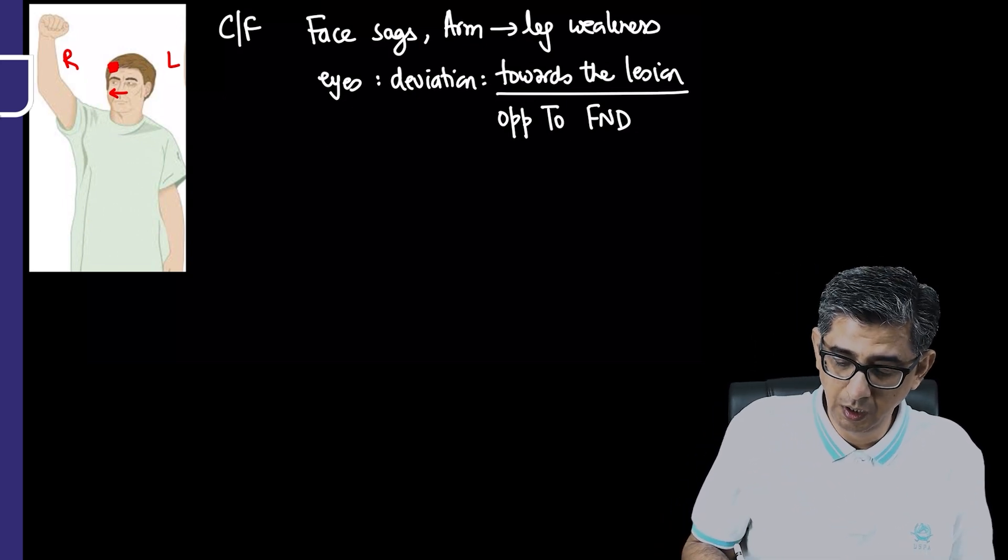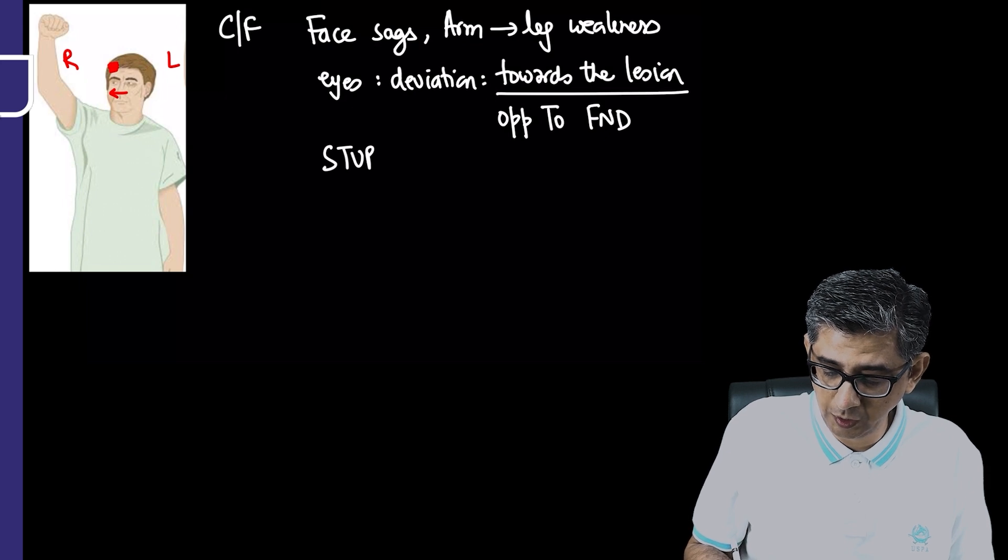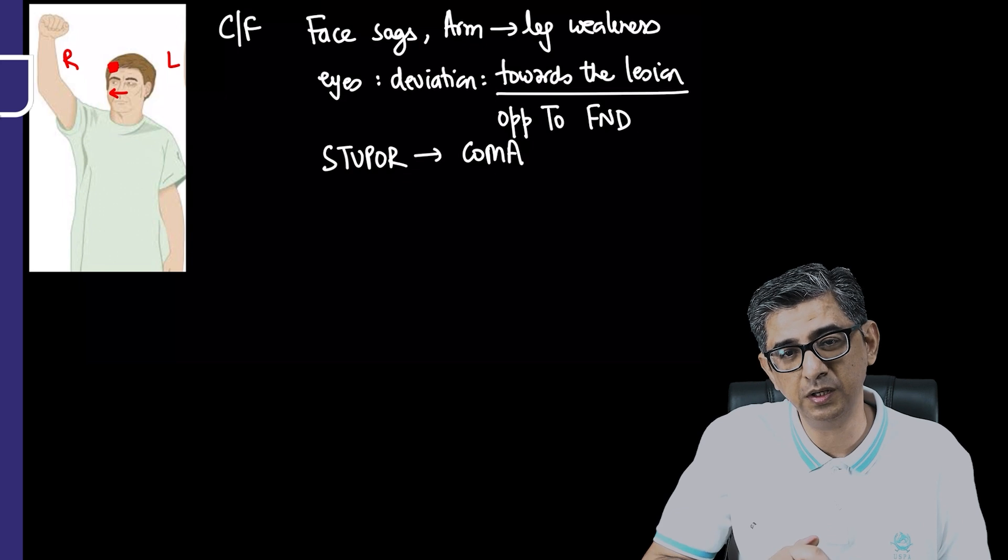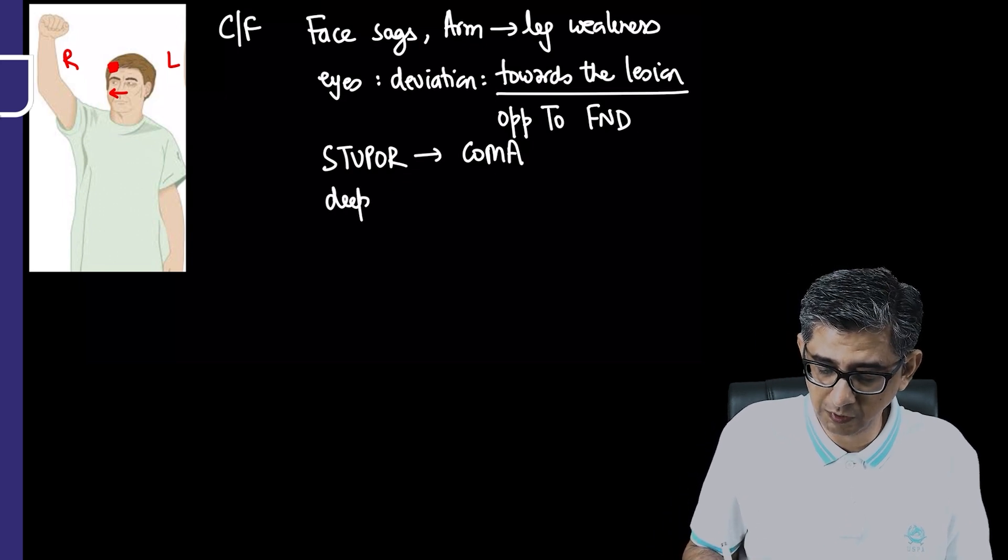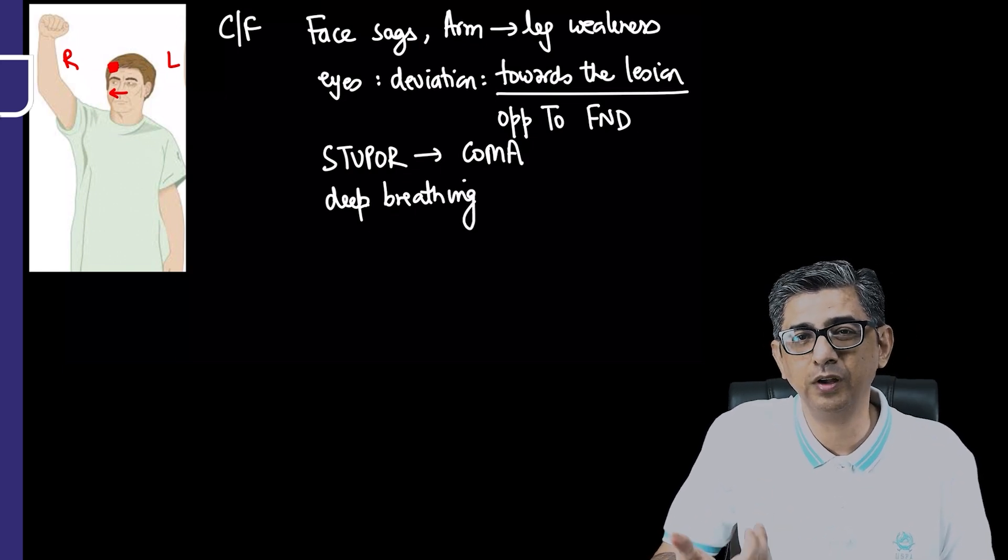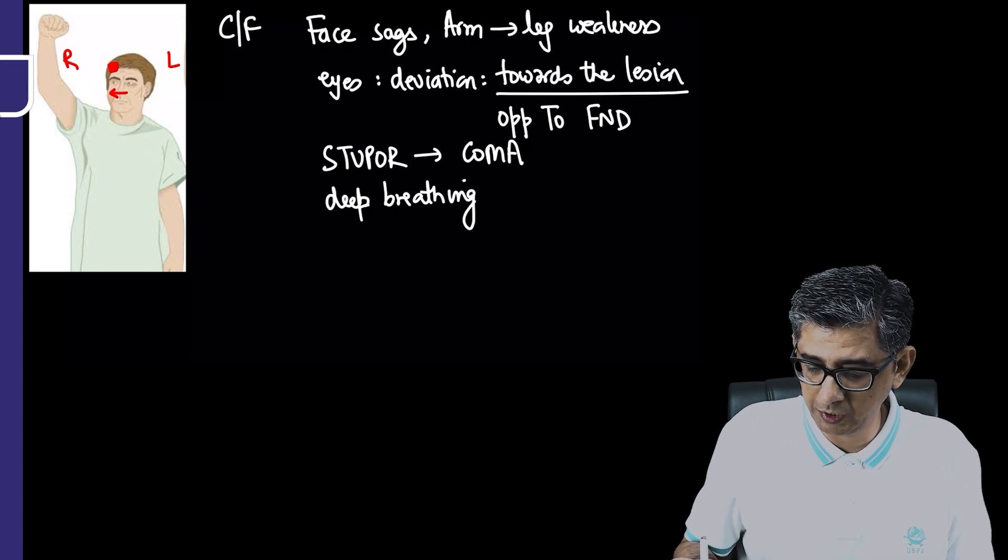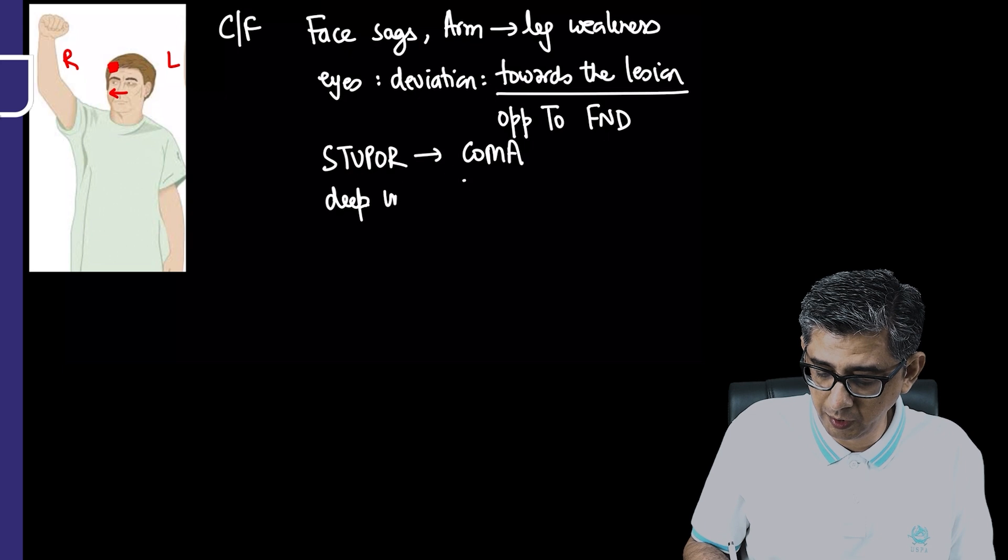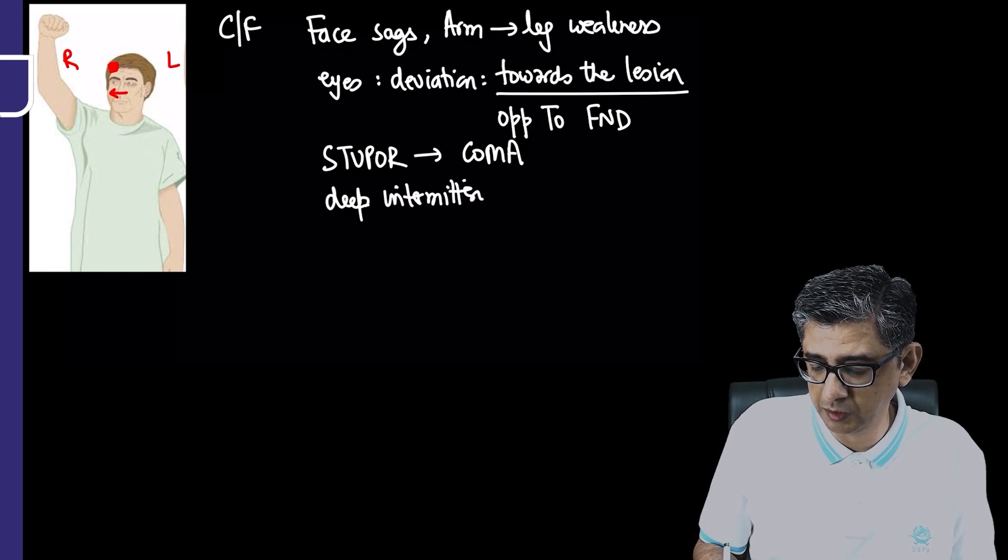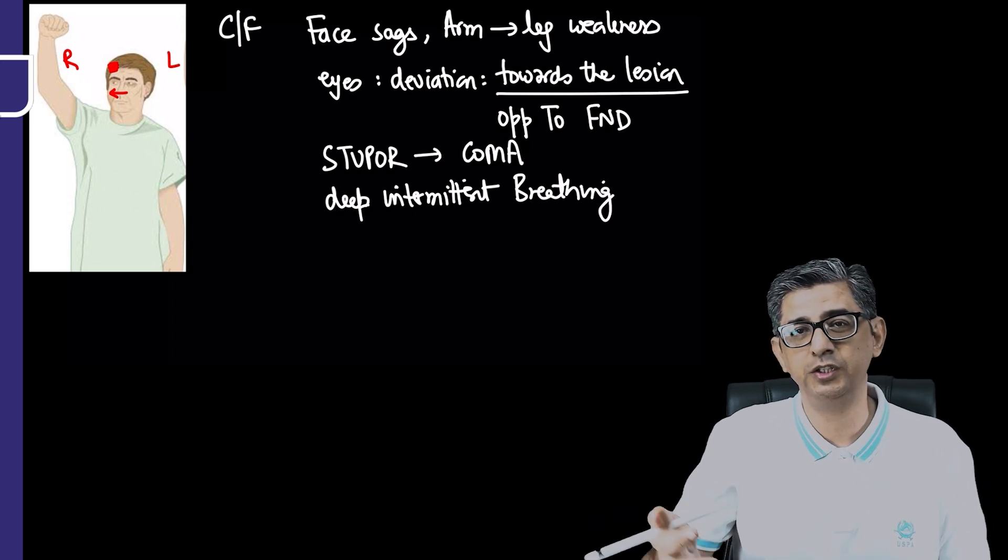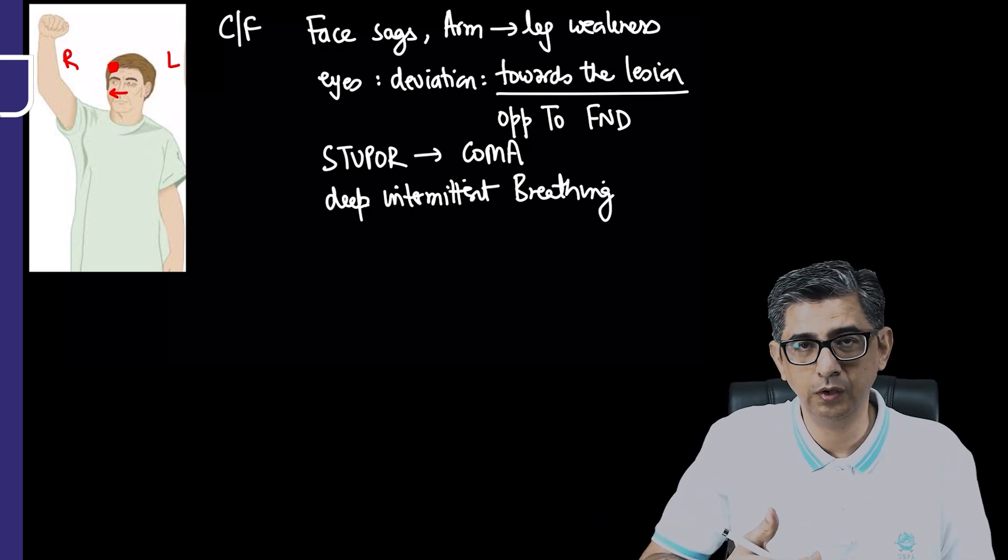In a patient with infratentorial bleed, development of stupor and coma occurs much faster. As raised ICP increases further, there might be development of Cheyne-Stokes breathing or Biot's breathing—irregularly irregular respirations or deep intermittent breathing.